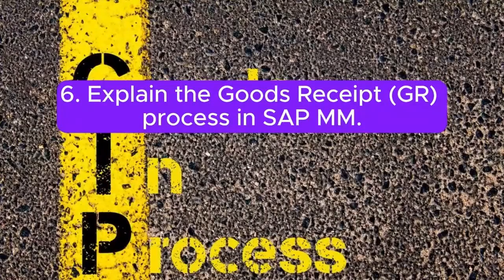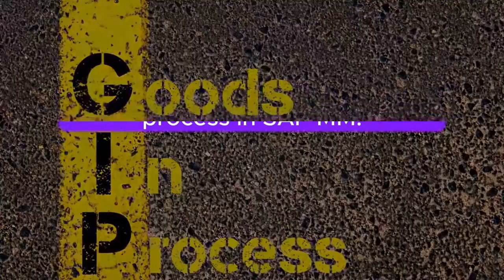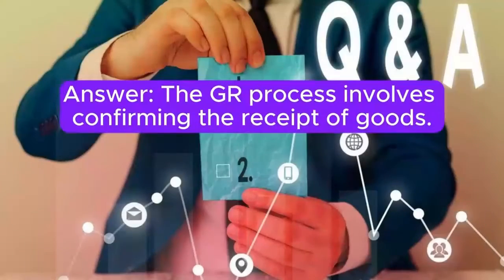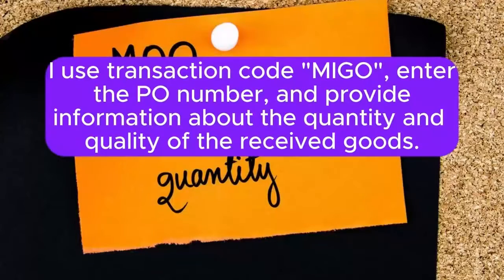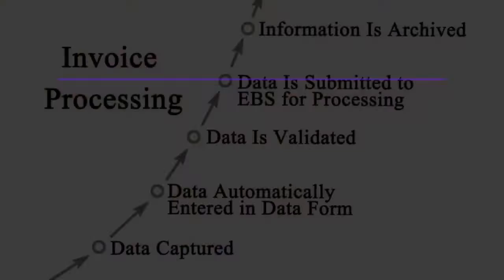Question 6: Explain the goods receipt (GR) process in SAP MM. Answer: The GR process involves confirming the receipt of goods. I use transaction code MIGO, enter the PO number, and provide information about the quantity and quality of the received goods.